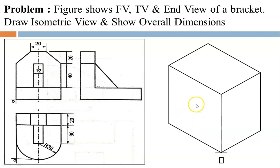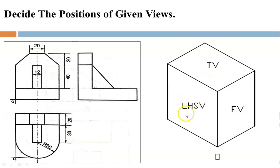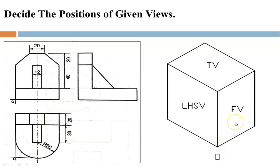If the LHSV comes on the left, your front view must be here, and this plane is for the top view. So here this is your LHSV, this is your front view, and this is your top view. Considering the origin, this view must be on the right of the origin — the front view is on the right of the origin and automatically the LHSV comes on the left. The top view remains at the top plane only. Now get all the dimensions.